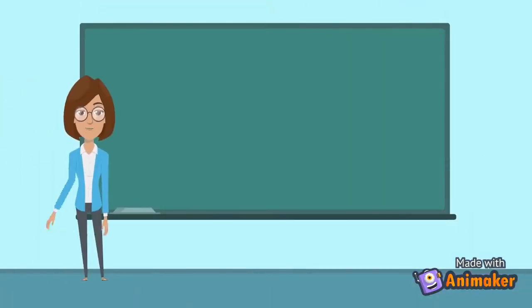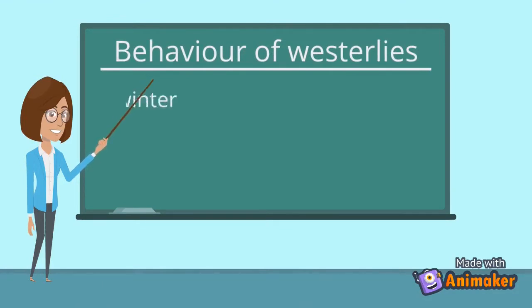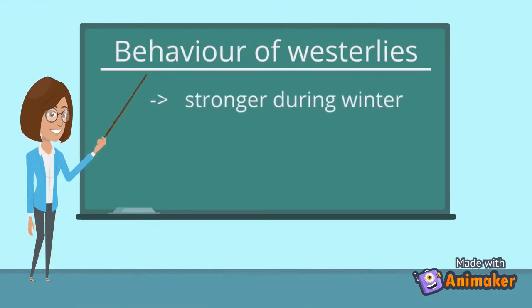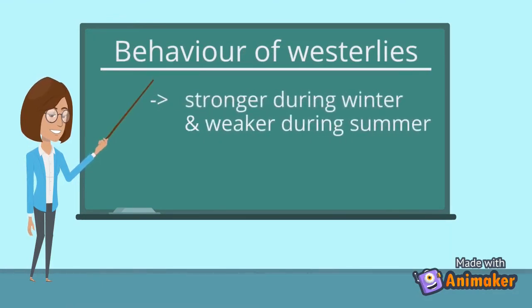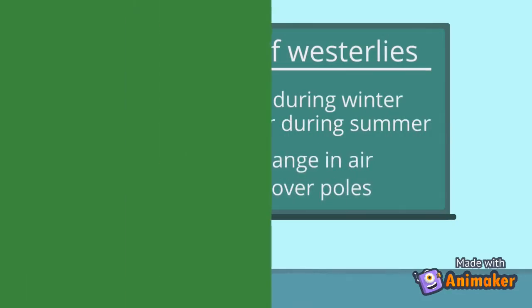Now, let us touch on the behavior of Westerlies winds. Westerlies are faster and stronger during winter season and weaken during summer season. This is due to the change in air pressure over poles for both seasons.